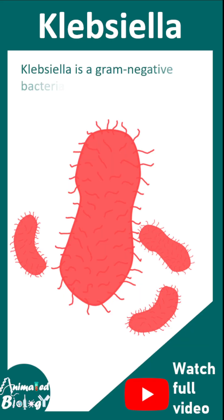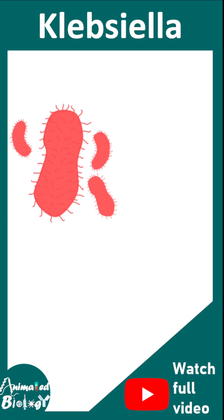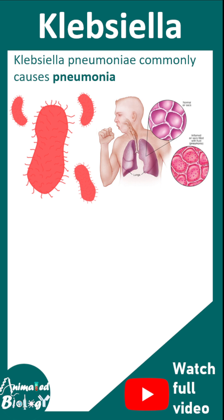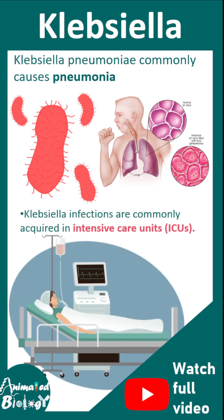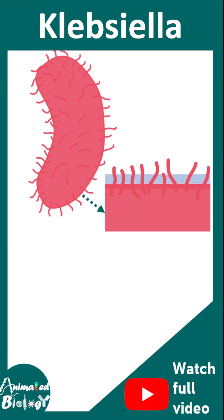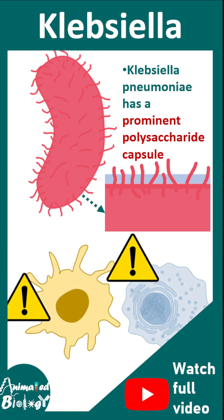Klebsiella is a gram-negative bacterial genus that can cause significant infection in humans. Klebsiella pneumoniae can be the causal organism for pneumonia. Klebsiella infection is generally acquired during intensive care unit (ICU) treatment because these bacteria prefer oxygen. Klebsiella has a thick capsule on the outer side which protects them from macrophages and dendritic cells.